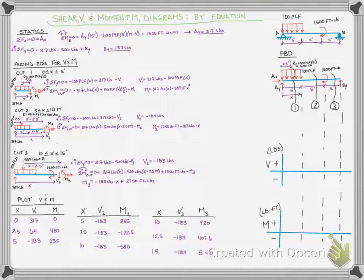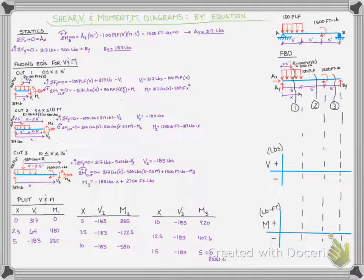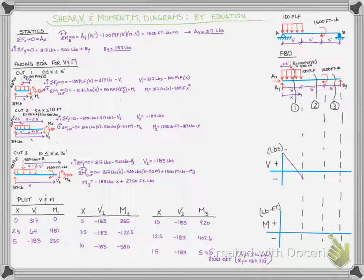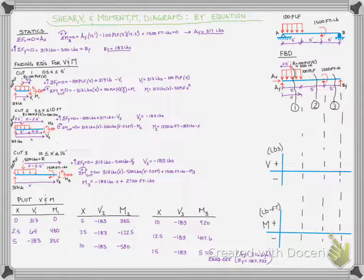For cut three (x = 10, 12.5, 15): shear remains constant, and the moment decreases from 920 down to approximately zero — we got five due to round-off, since AY is actually 316.667 pounds and BY is 183.333 pounds. That five is less than one percent of the maximum moment, so it's negligible. At x equals ten feet, the moment jumps from negative 580 (from M2) to positive 920 (from M3) — a jump of 1500 foot-pounds, exactly equal to the applied moment, as expected.